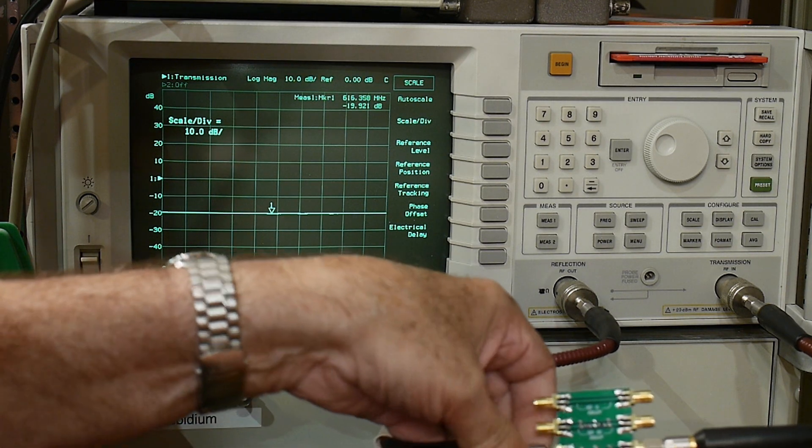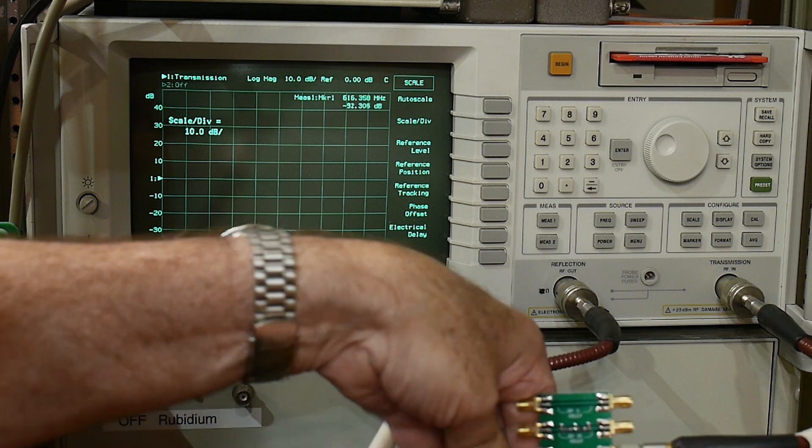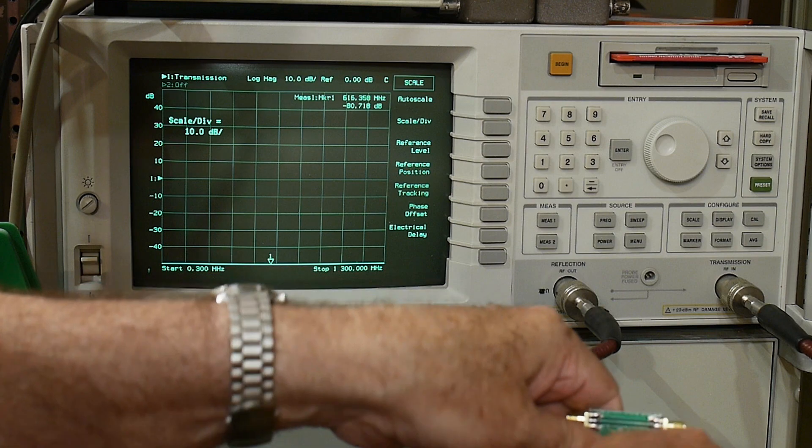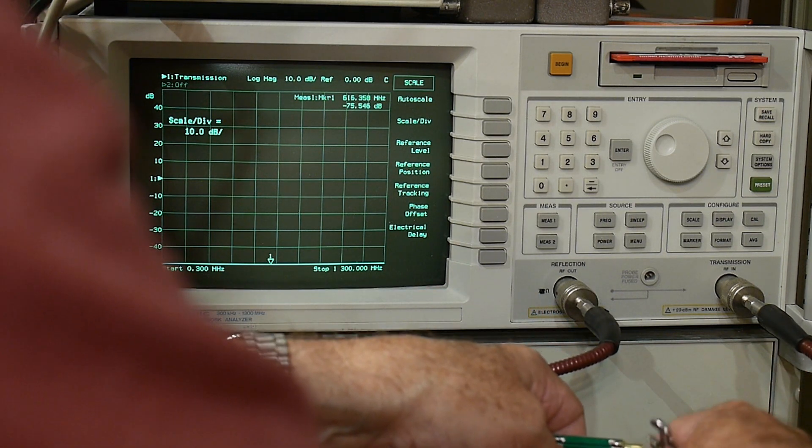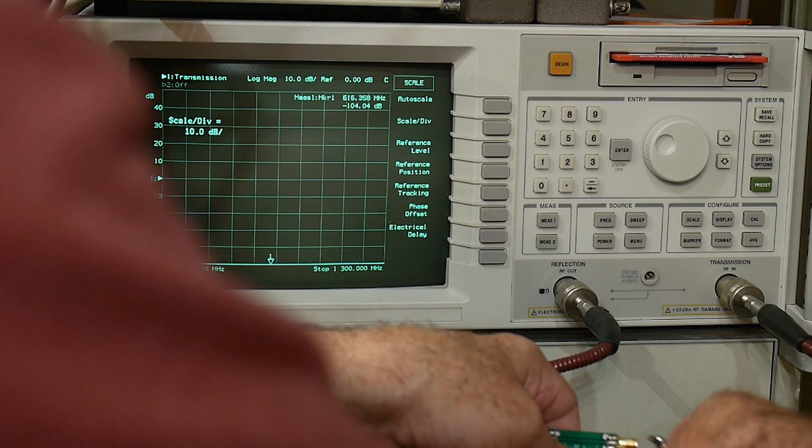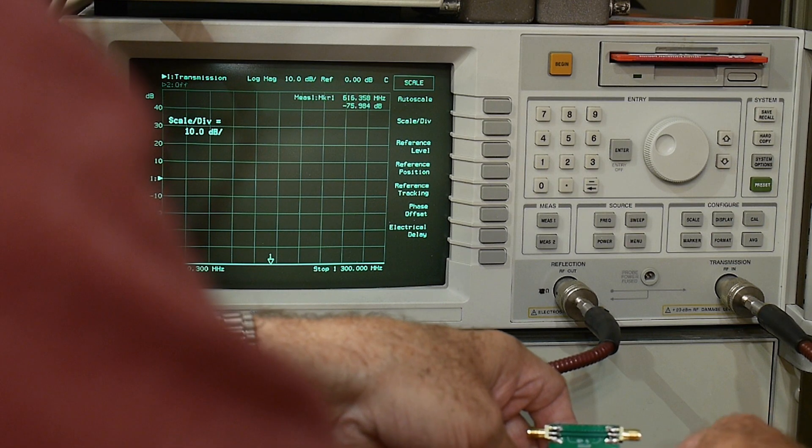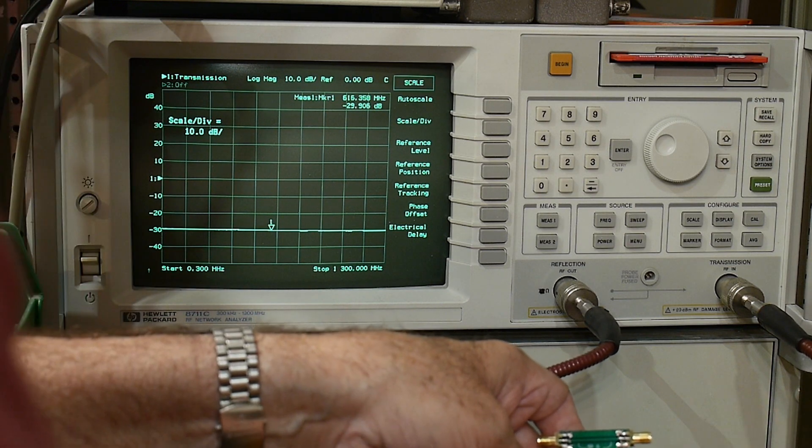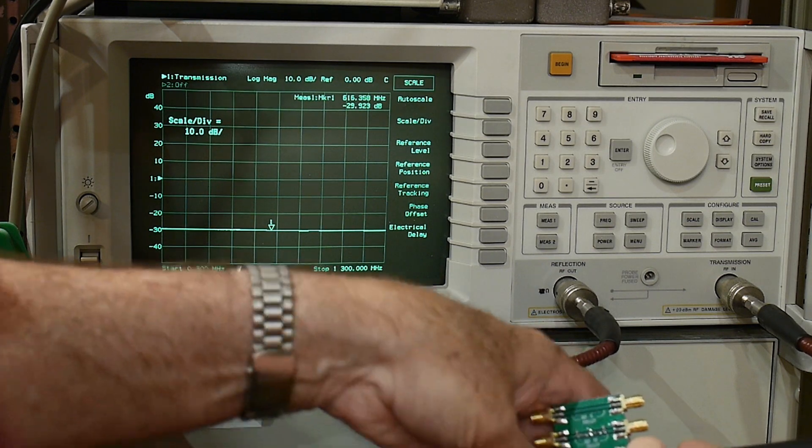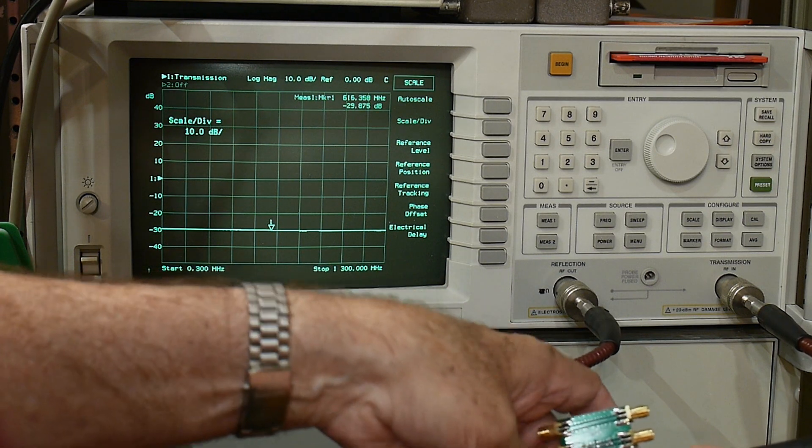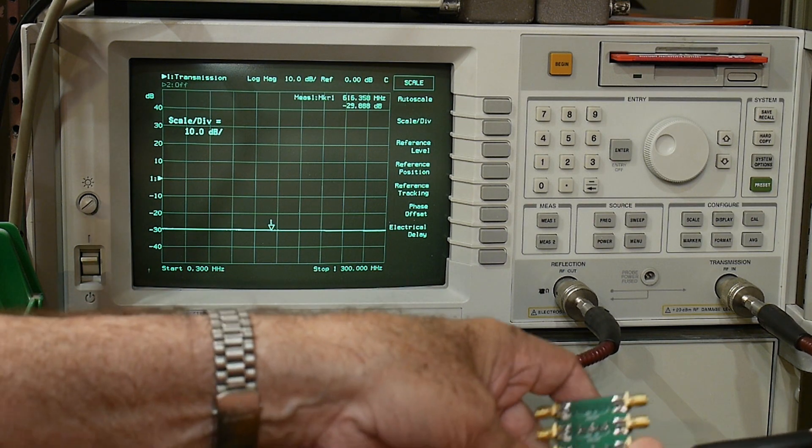And then we'll try 30 dB. These types of attenuators are very easy to design - these are two pi sections. There we go, 30 dB looks just great. Now what I'm really curious about...